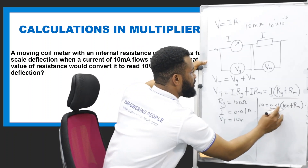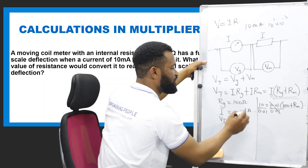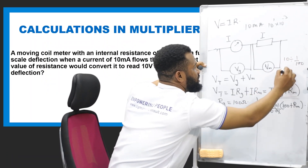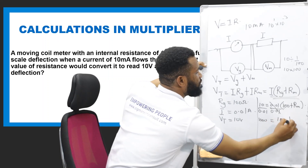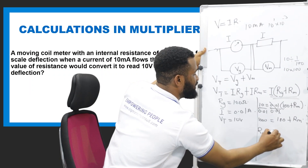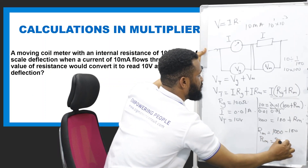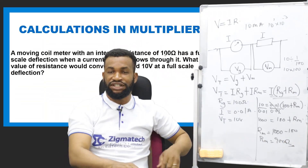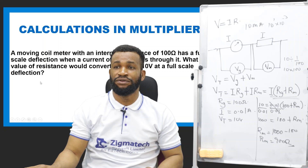Dividing both sides by 0.01 — which is the same as multiplying by 100 — gives 1000 = 100 + Rm. Therefore, Rm = 1000 minus 100, so Rm = 900 ohms. This is the resistance of the multiplier needed to be connected to the circuit to help it have full-scale deflection when 10 volts is applied.